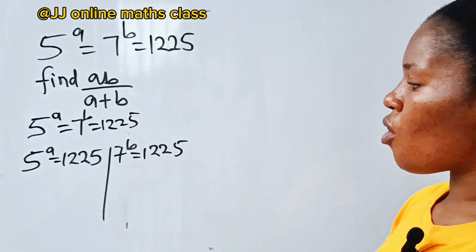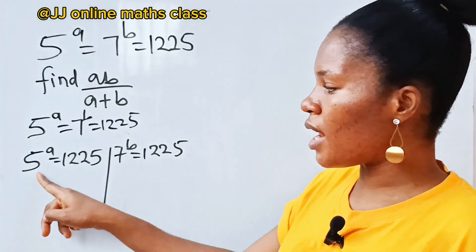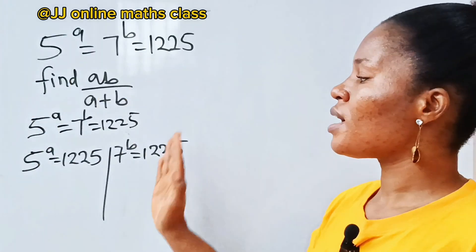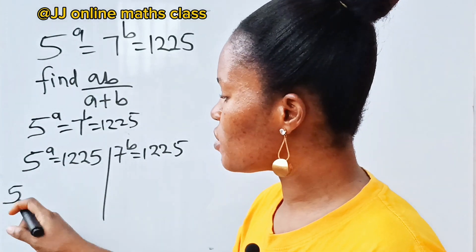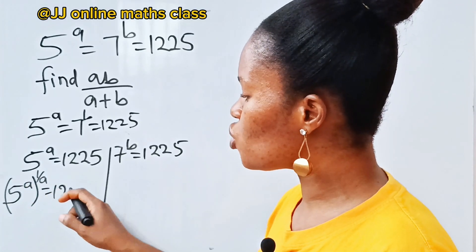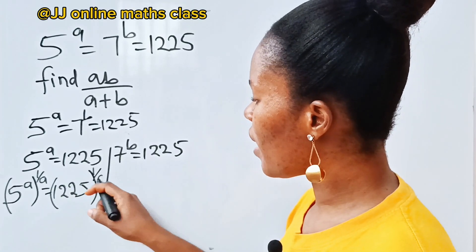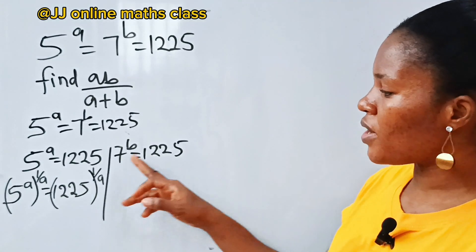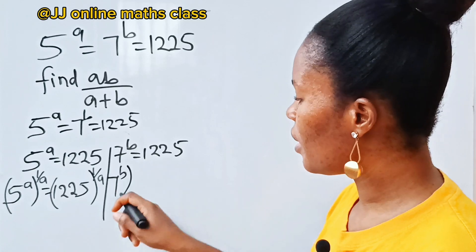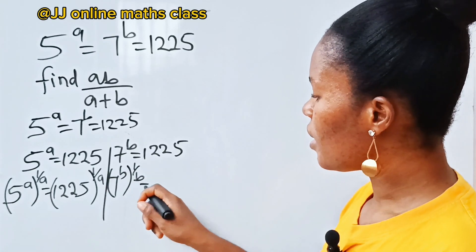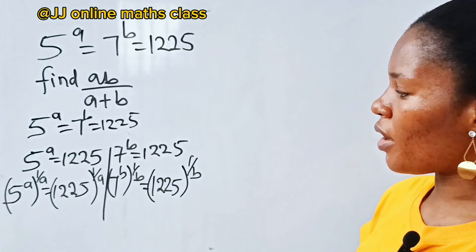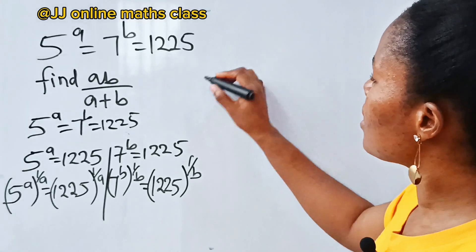So what do we do? Let's raise each side of the first equation to the power of one over a, because I want only five to remain and I want to shift the a power to the other side. Similarly, let's raise each side of the second equation to the power of one over b. So we have seven to the power of b raised to the power of one over b is equal to 1225 raised to the power of one over b.